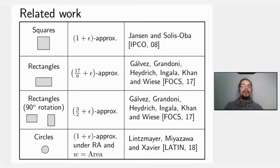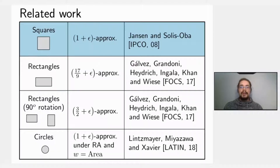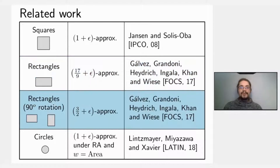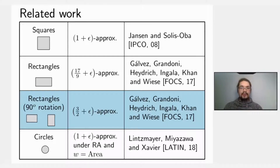Geometric knapsack problems have been heavily studied in recent years and are heavily reliant on what the input shapes look like. For squares there is a 1+ε approximation, given by Janssen and Solis-Ova at IPCO 2008. For rectangles there is a 17/9 approximation by Galvez, Grandoni, Heydrich, N'Gala, Khan, and Vise at FOCS 2017. The same set of authors give a 3/2 approximation where rectangles are allowed to rotate by 90 degrees; all previous work does not consider arbitrary rotation.